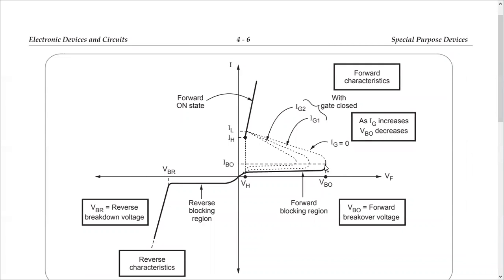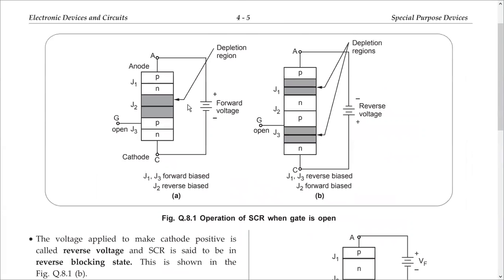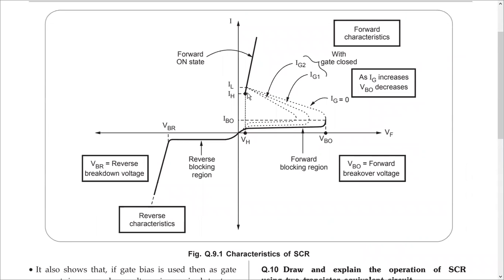When the device turns from off to on, the current is known as latching current. If you want to make the device off again, you have to reduce the anode current — which is the overall current flowing through this device — below a current called holding current IH. The corresponding voltage below which the device turns from on to off is the holding voltage.